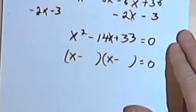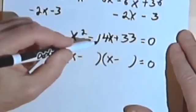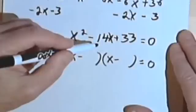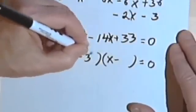Now I'm thinking, how can I make 33? Well, it's either 1 times 33, which is not going to get me to negative 14, or it's 3 times 11. And negative 3 and negative 11 are negative 14. So good, there we go.